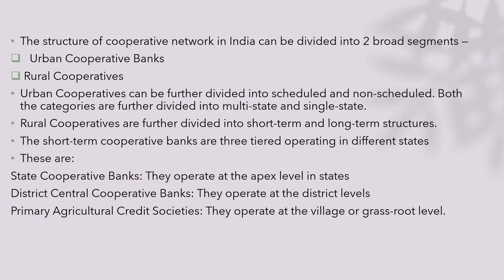So the structure of the cooperative network shows two types: rural as well as urban. In the case of urban, we have both scheduled and non-scheduled. And in the case of rural, we have short-term as well as long-term.